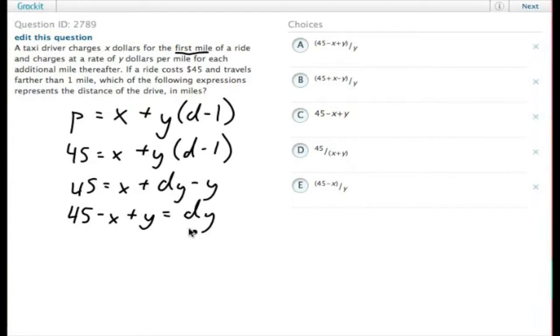Since we're trying to isolate D here, we divide each side by Y, and we get 45 minus X plus Y over Y equals D, which just so happens to be answer A here.